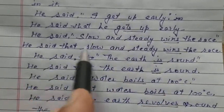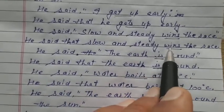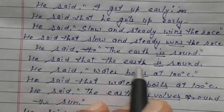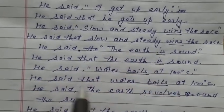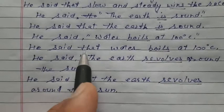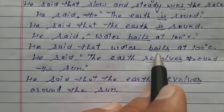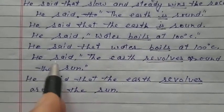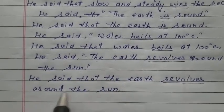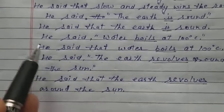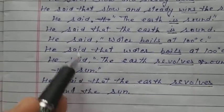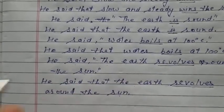'He said slow and steady wins the race' — this is a proverb — indirect: 'He said that slow and steady wins the race'; wins remains wins. 'He said the earth is round' — universal truth — indirect: 'He said that the earth is round'; is remains is. 'He said water boils at 100 degrees Celsius' — universal truth — indirect: 'He said that water boils at 100 degrees Celsius'; boils does not change. 'He said that the earth revolves around the sun' — universal truth — revolves does not change. Note: only the tense does not change; inverted commas are removed, appropriate conjunction is added, and pronouns change as required.